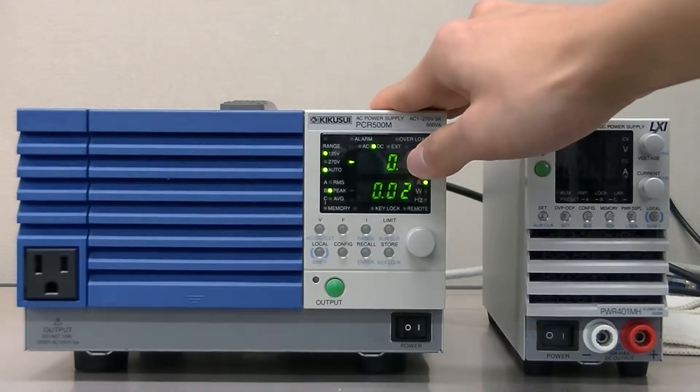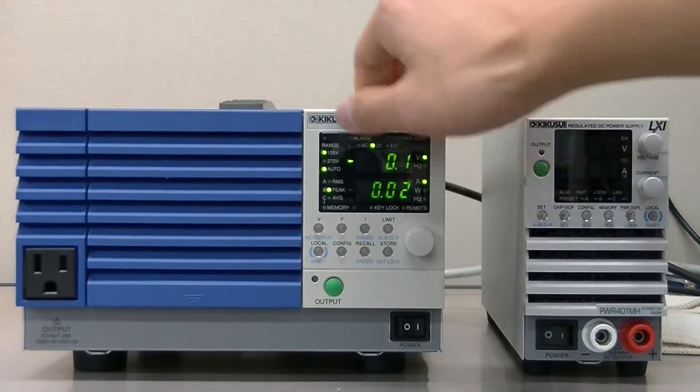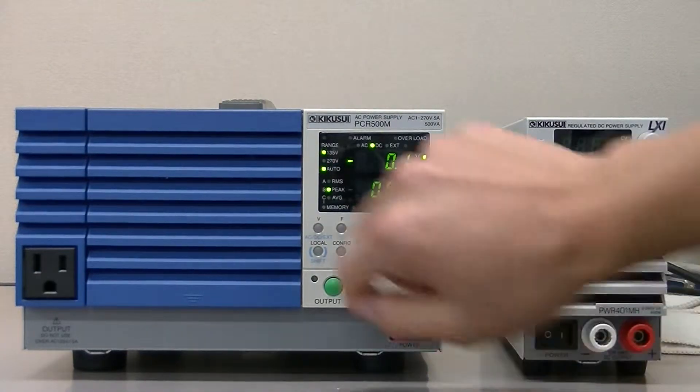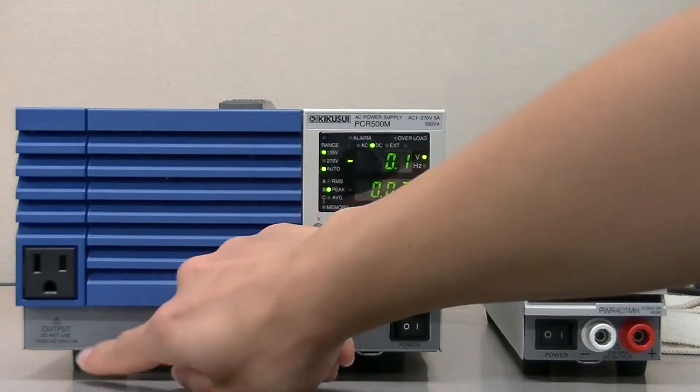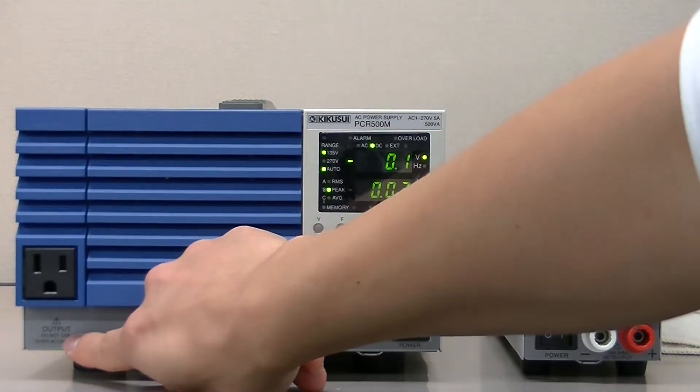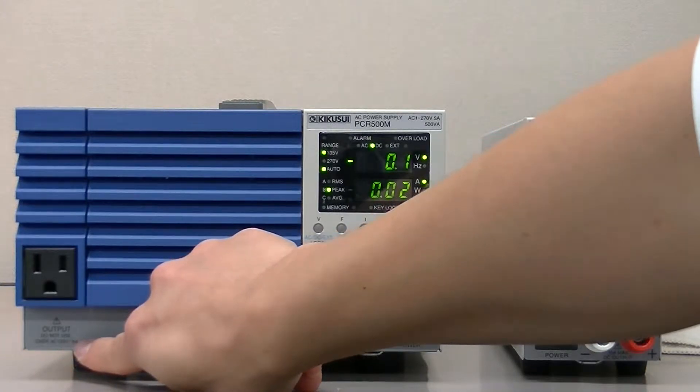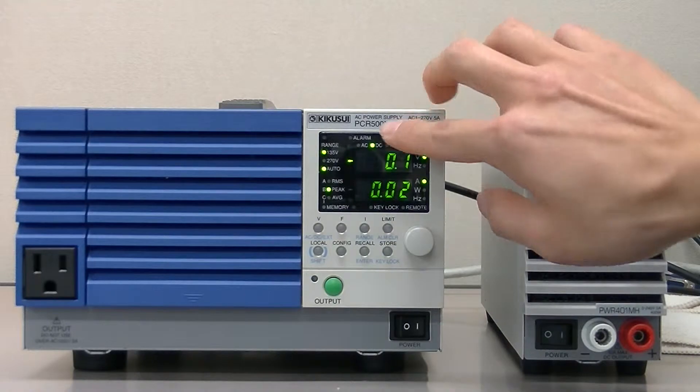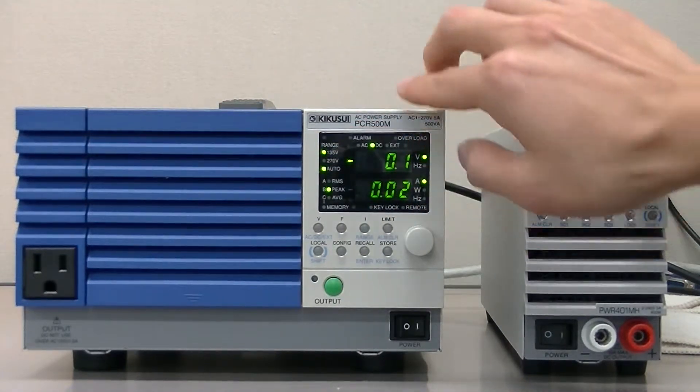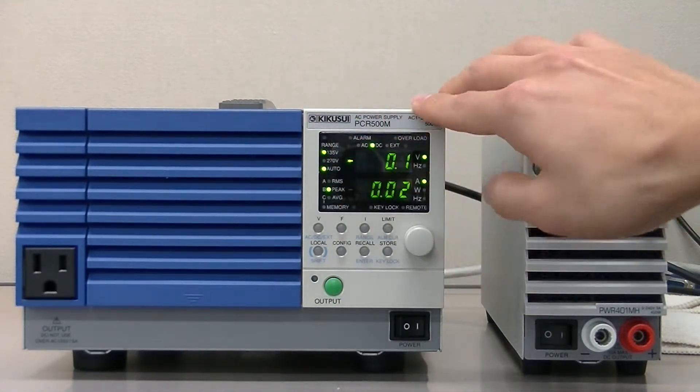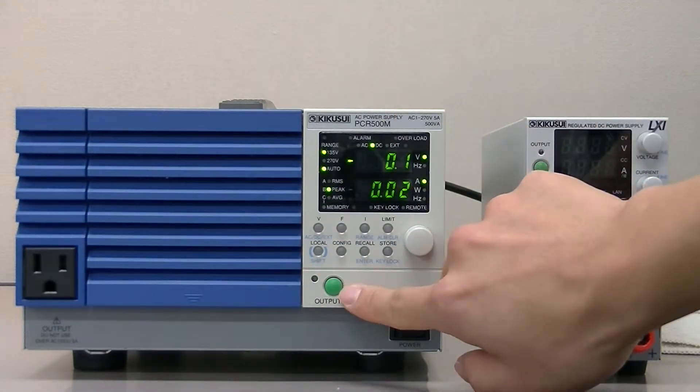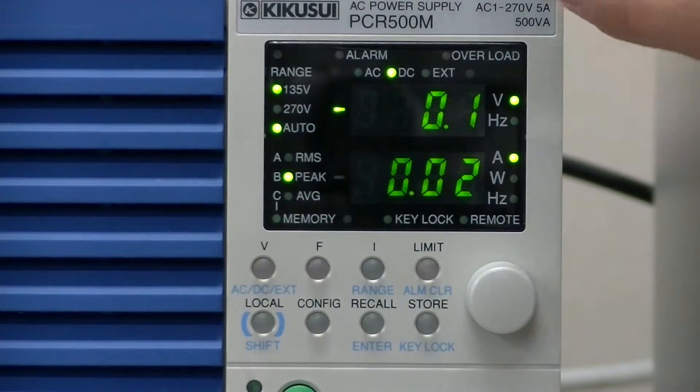First, let's take a look around the unit. On the front side, you can see the power switch right here and the output terminals. Please note that the output terminals you can use only at 135 volts. You can see this display which shows the parameters of the unit as well as the settings, and last is the green output button. Let's set the parameters first.